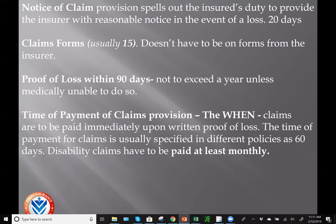These next three are more numbers to memorize. The notice of claim provision requires you to give notice of claim to the insurer within 20 days — notice to the agent equals notice to the insurer. Once you've done that, the claim forms provision says they must send out claim forms within 15 days. If you do not receive any claim forms, you can write the nature of your loss on any piece of paper.